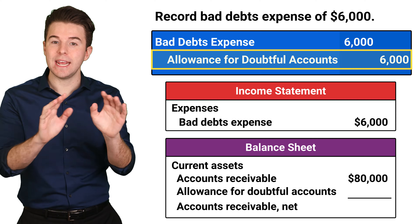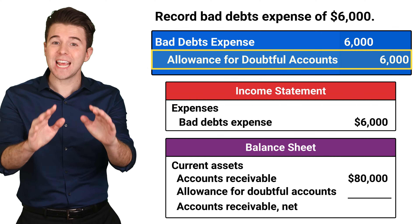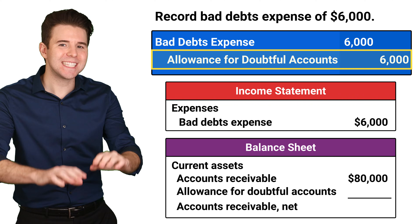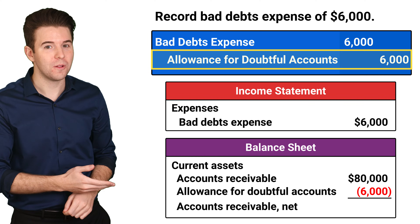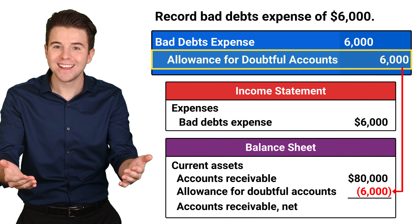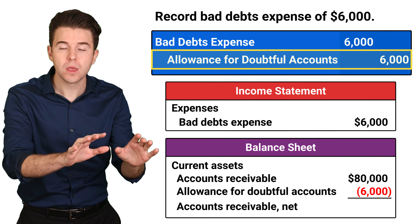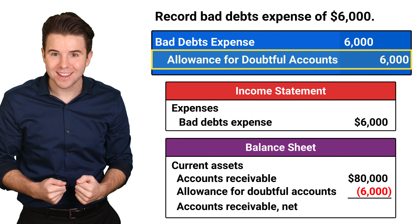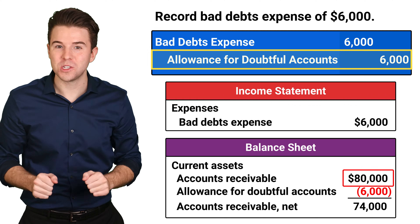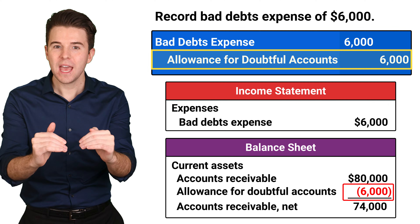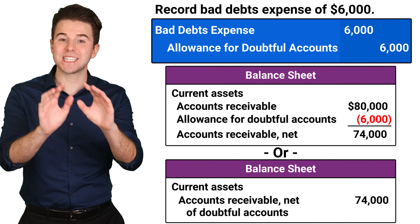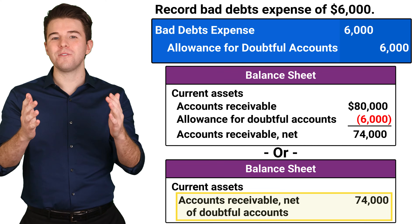We show 80,000 in accounts receivable because this is the amount of sales not yet collected. Next, we report allowance for doubtful accounts as a 6,000 subtraction from accounts receivable. The 6,000 is the amount we estimated as uncollectable. Therefore, the realizable value, or the amount we actually expect to receive, is 74,000. The 74,000 is the 80,000 owed to us minus the 6,000 that we estimate will be bad debts.